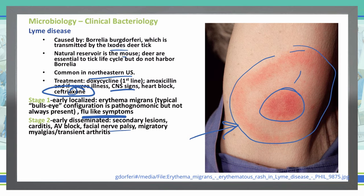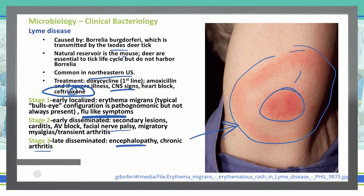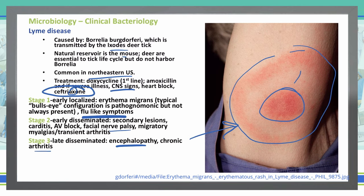Stage three is the late disseminated stage where we get encephalopathy or chronic arthritis. Stage three is definitely where we would use ceftriaxone to treat, and we would likely use ceftriaxone in stage two as well due to those heart blocks.